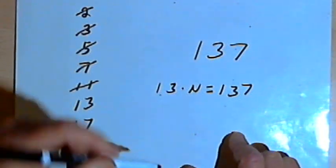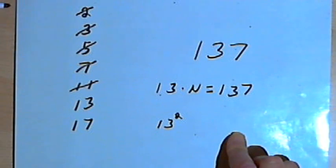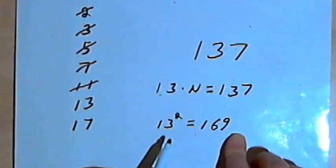13 times 13, or 13 squared, equals 169, and that's too big.